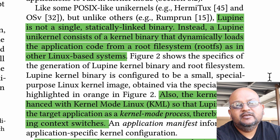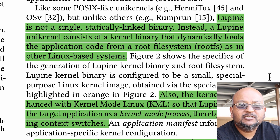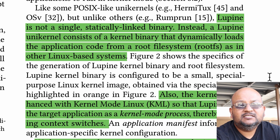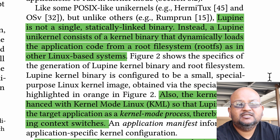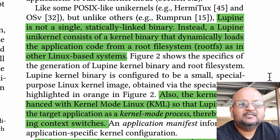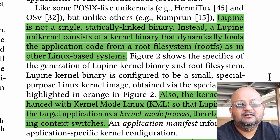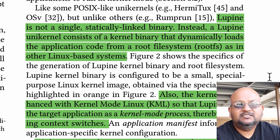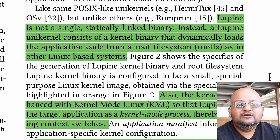The authors here are proposing something called Lupine Linux, which tries to get the best of both worlds. You start with an application that runs on top of Linux, but then specialize the application plus the Linux kernel to get something very, very close to a unikernel with all the excess baggage cut away. And they do this with two specific techniques.